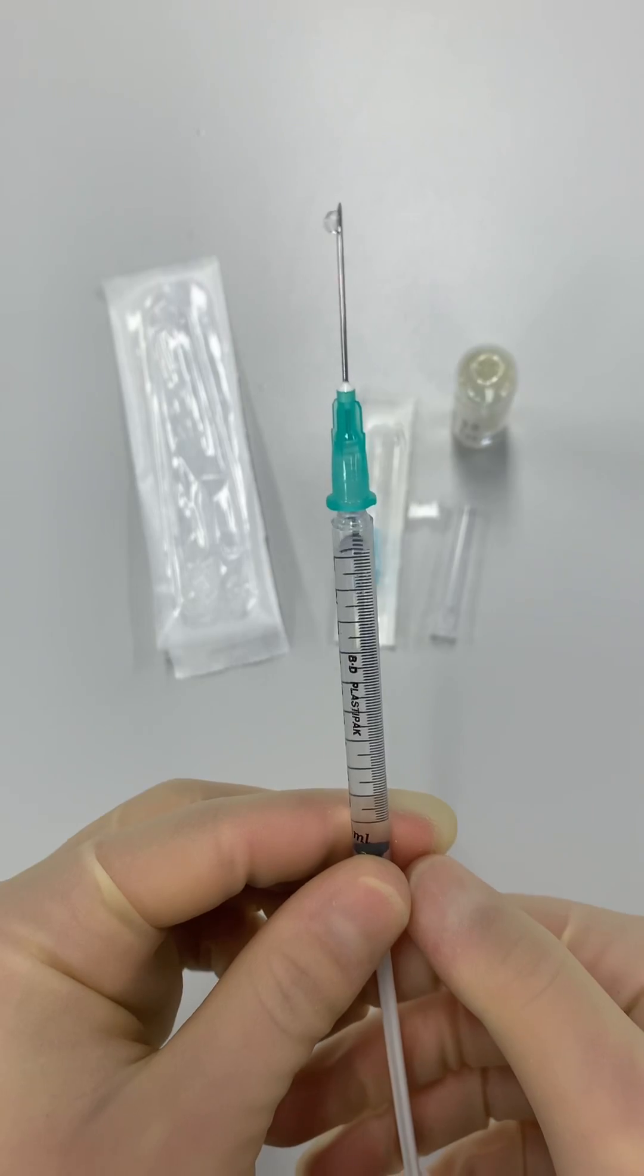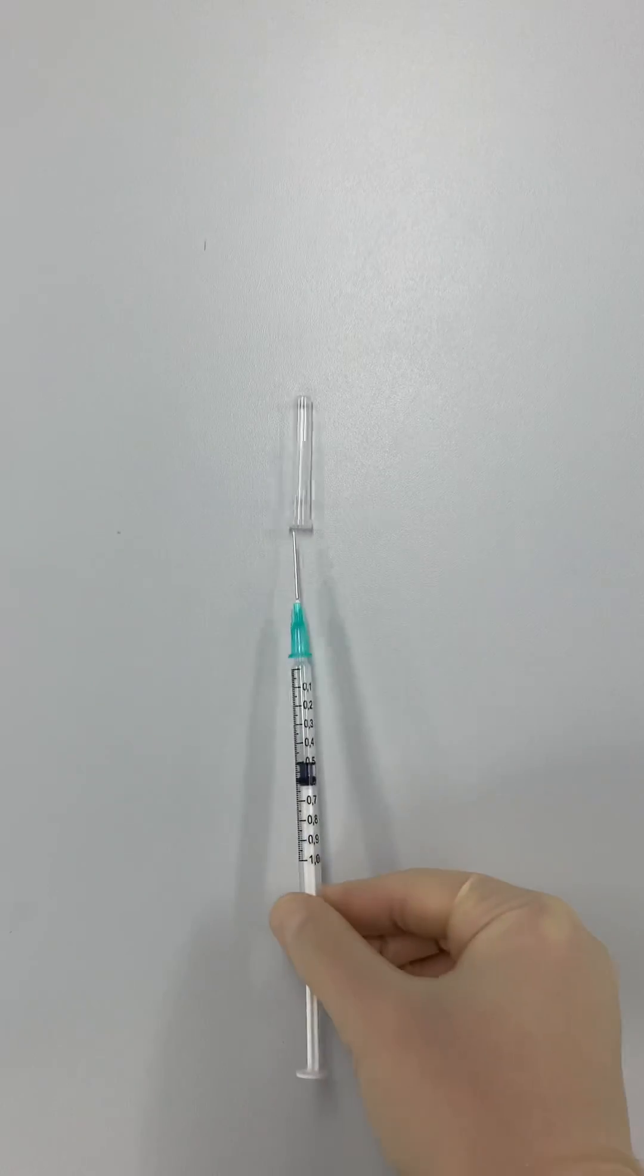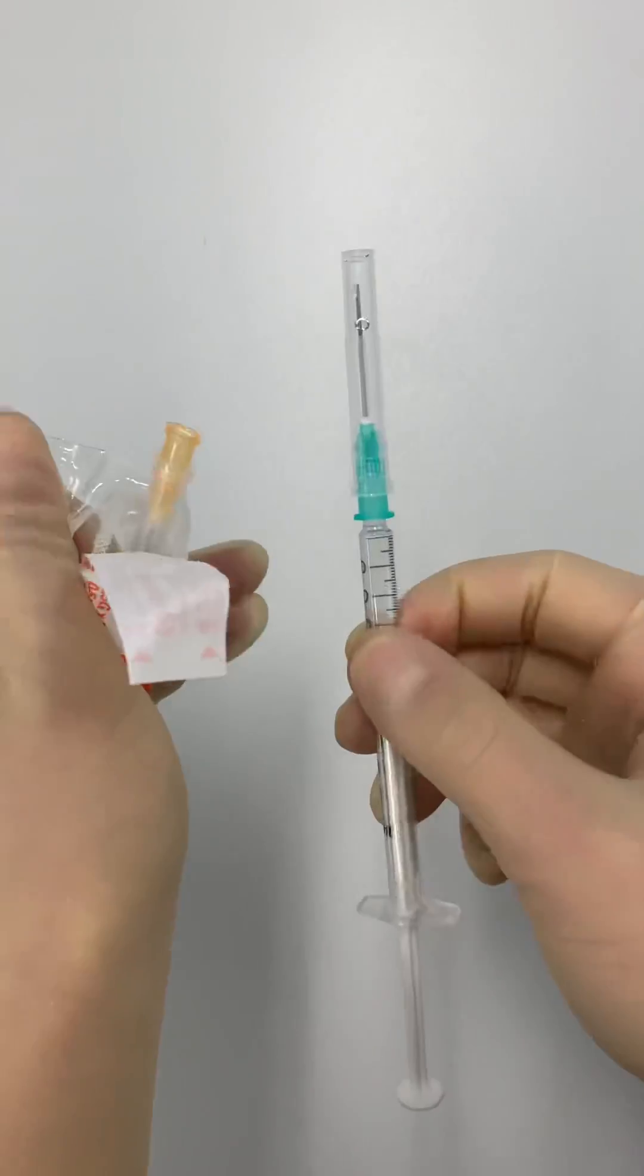Then empty the syringe until you're left with the required dose. To recap the needle, put the cap down and slide the tip of the needle into it. Now all you have to do is change the needle and you're ready to inject.